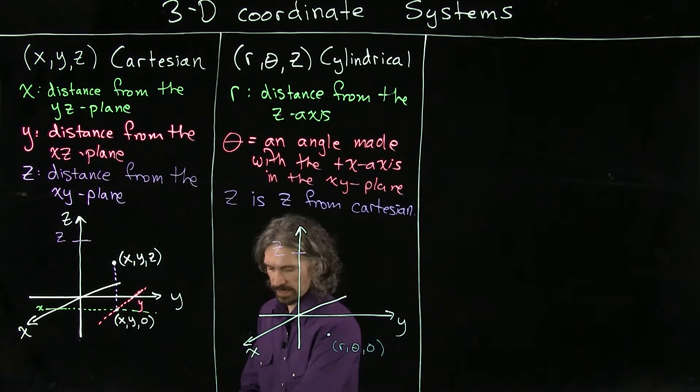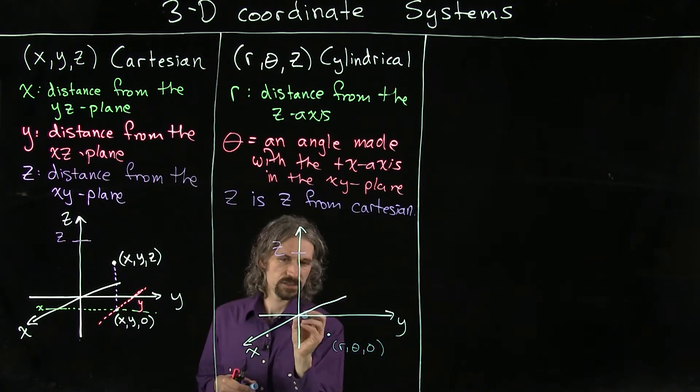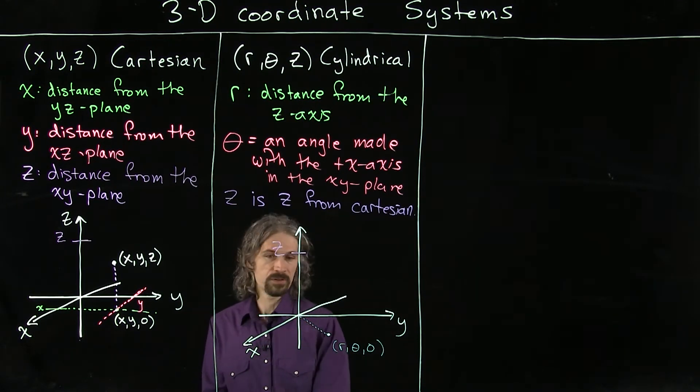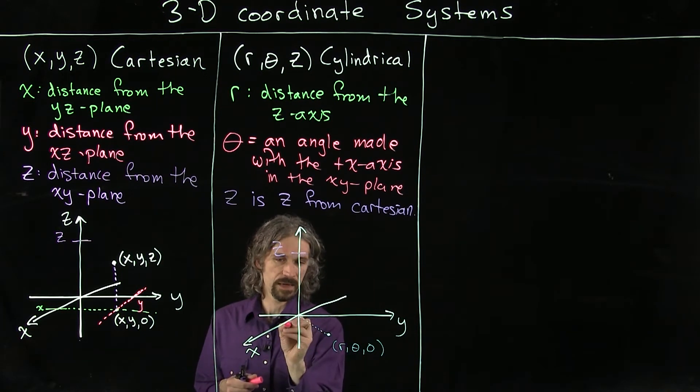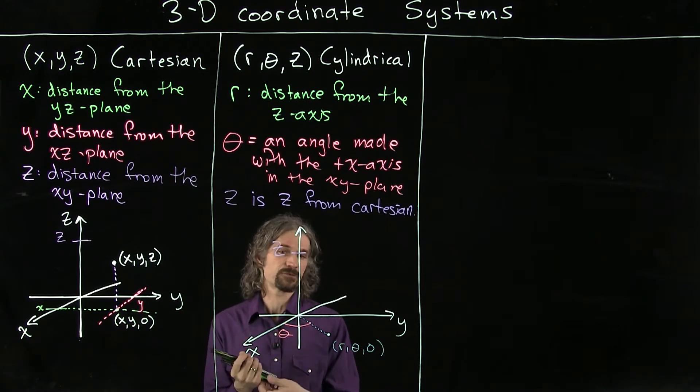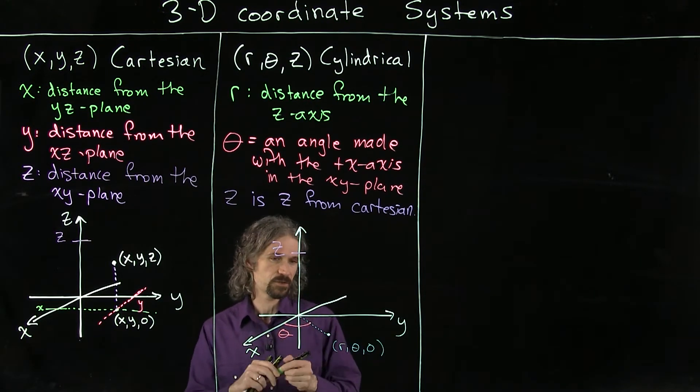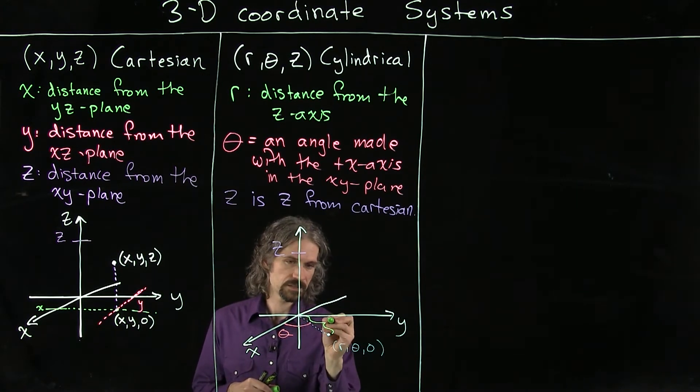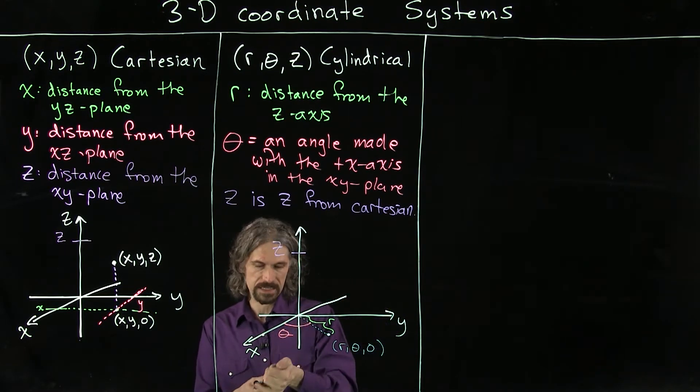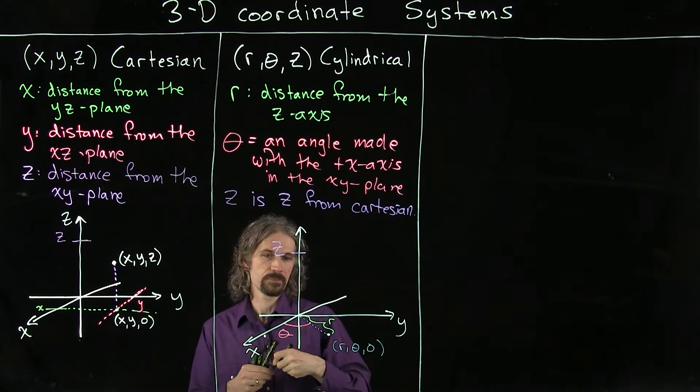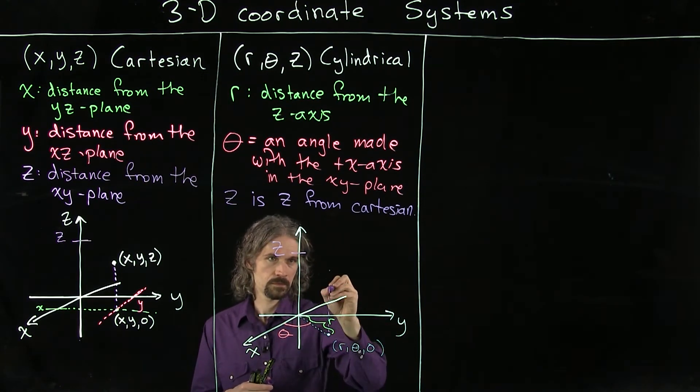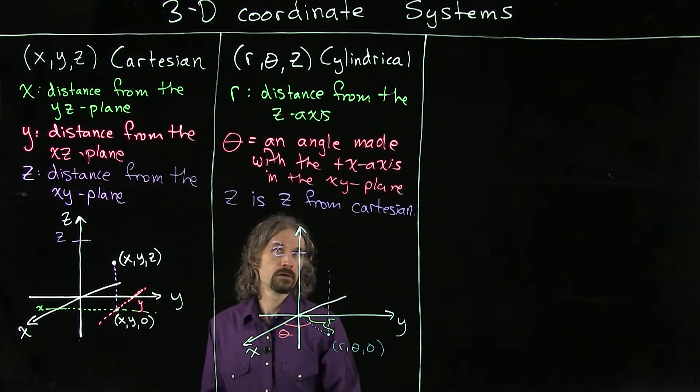Now we can have a straight line down in the xy plane that comes out to that point r, theta, zero. And now we can more easily label the angle theta, because it's the angle made with the plus x-axis. And we can now easily label our r, because r is the distance from the z-axis, which is now actually the distance from the origin. So r is this distance from the origin. And now we can just go up by z again from that location to get up to r, theta, z.